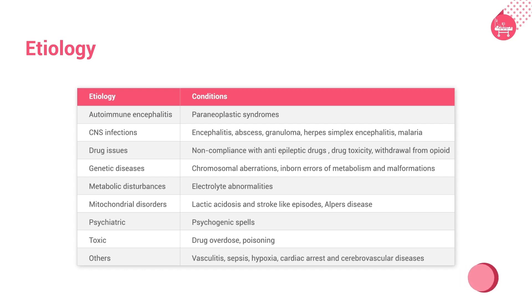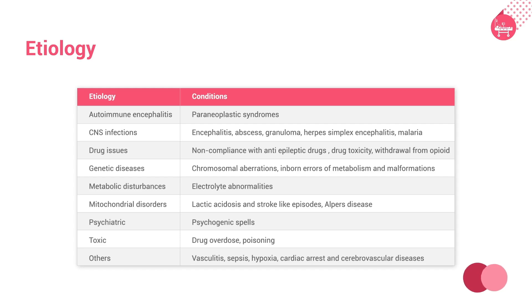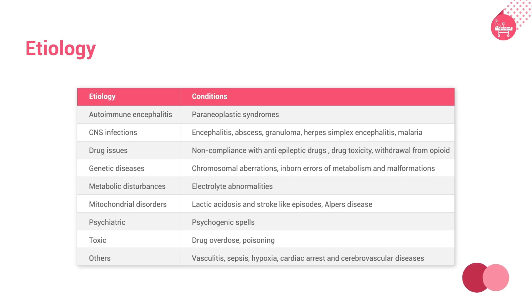Mitochondrial causes include lactic acidosis and stroke-like episodes, and Alper's disease. Psychiatric causes include psychogenic spells. Toxic causes include drug overdose and poisoning. Other etiologies include vasculitis, sepsis, hypoxia, cardiac arrest, and cerebral vascular diseases.